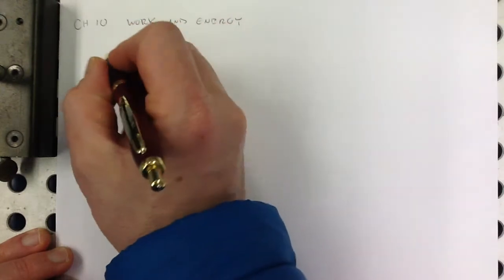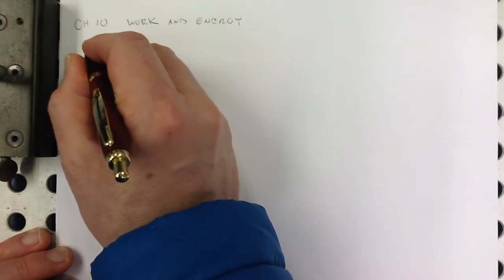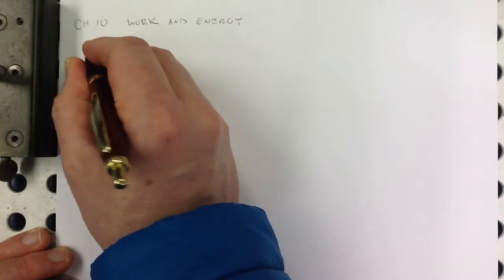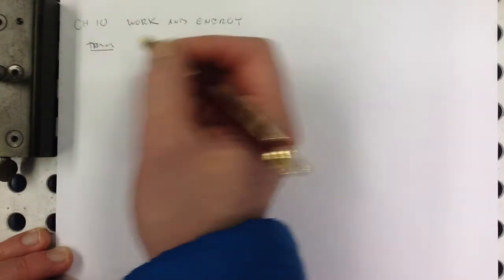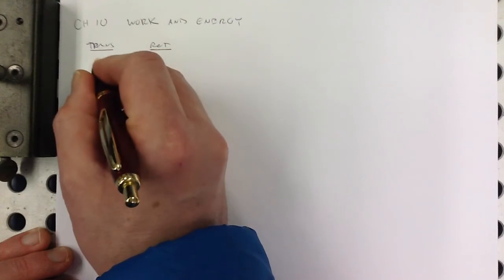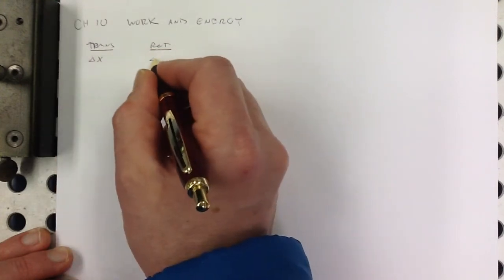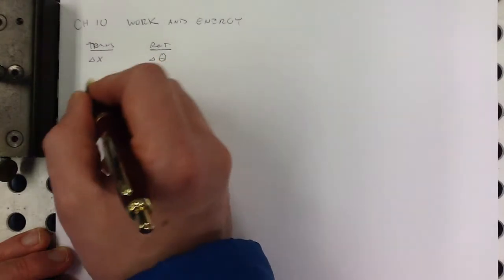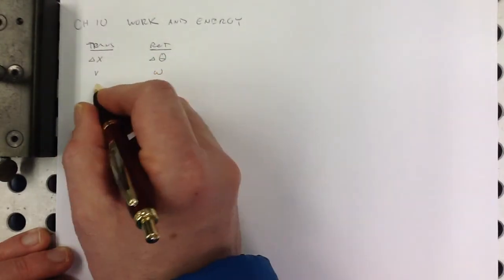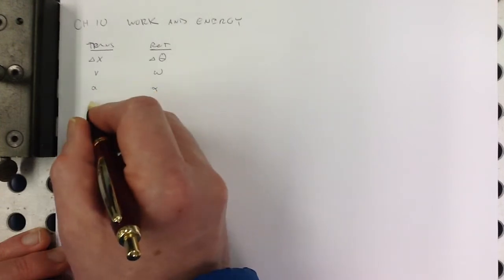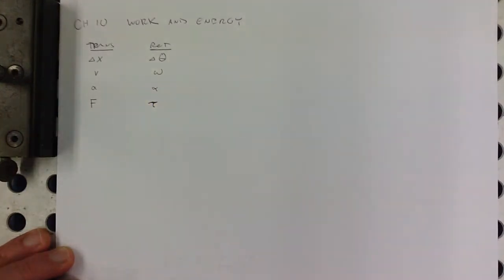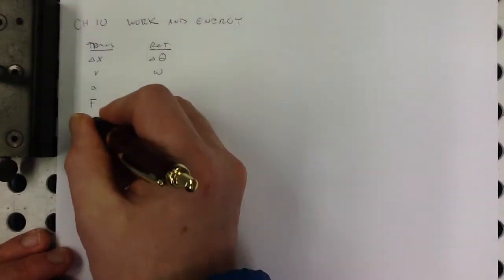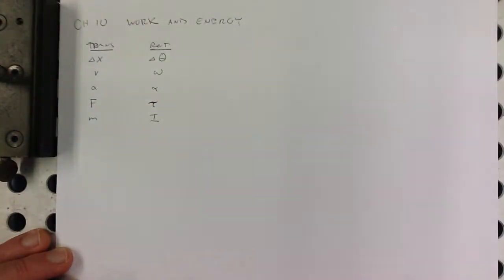So we know that if we have our translational variables and our rotational variables, we have the analogs of these. Translationally we would talk about displacement and rotationally we talk about angular displacement. Here we have velocity, here we have angular velocity, acceleration, angular acceleration. Here we have force and over here we have torque. Here we have mass, here we have rotational inertia.